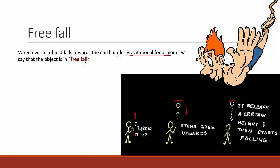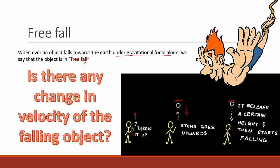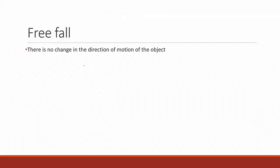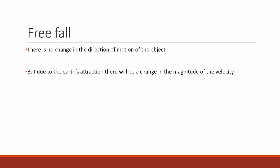Now a simple question: is there any change in velocity of the falling object? We know that there is no change in direction of motion — the stone that goes up does not fly away in a tangent, it comes back to earth. But due to the earth's attraction, there will be a change in the magnitude of velocity.